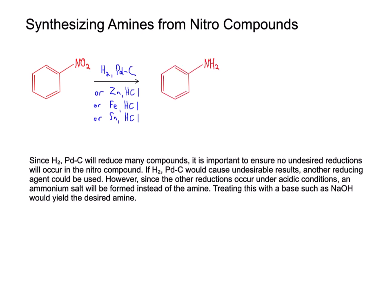Since H2/Pd/C will reduce many compounds, it's important to ensure no undesired reductions will occur in the nitro compound. If H2/Pd/C would cause undesirable results, another reducing agent could be used. However, since the other reductions occur under acidic conditions, an ammonium salt will be formed instead of an amine. Treating this with a base such as NaOH would yield the desired amine.